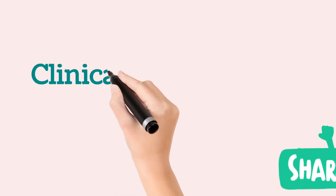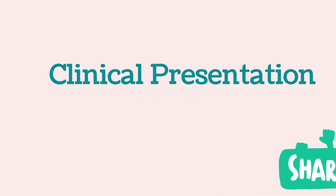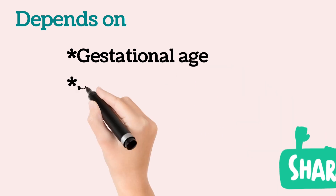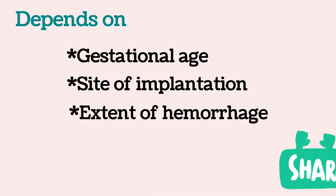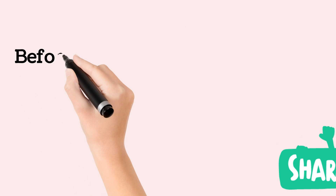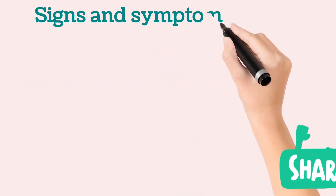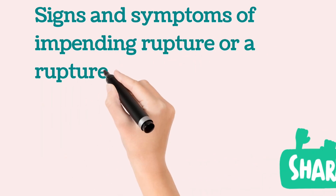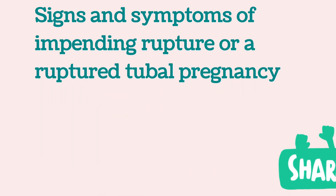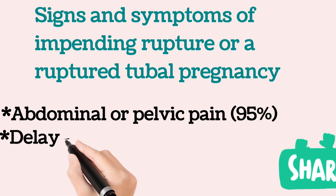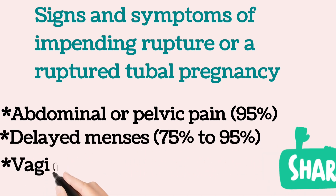The clinical presentation of a patient with ectopic pregnancy depends on the gestational age, site of implantation, and the extent of hemorrhage. Before rupture, the signs and symptoms are often subtle. Classical clinical signs of impending or ruptured tubal pregnancy include abdominal or pelvic pain, delayed menstruation, and vaginal bleeding.